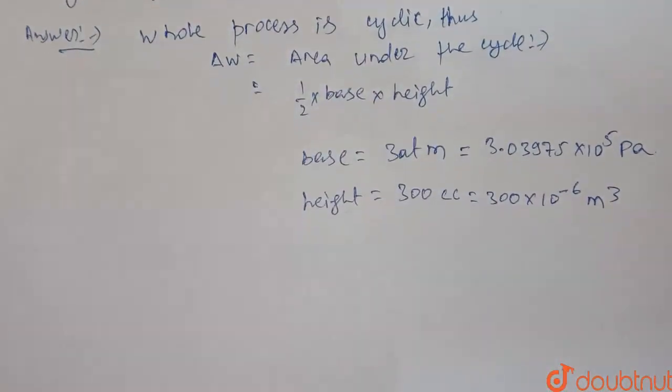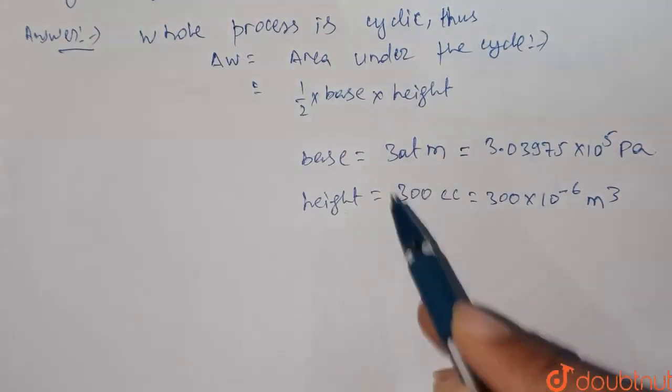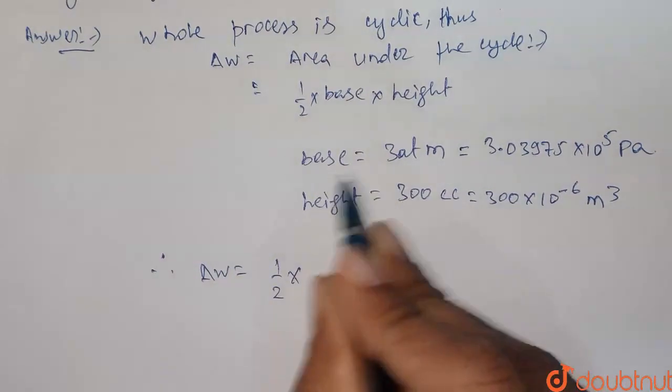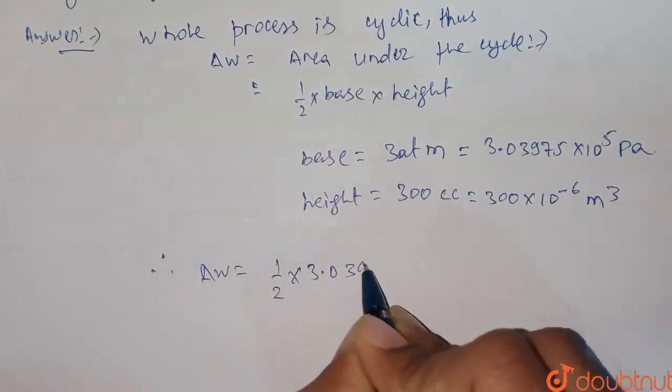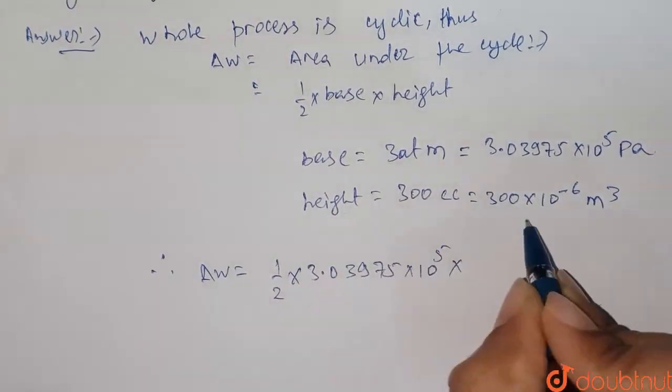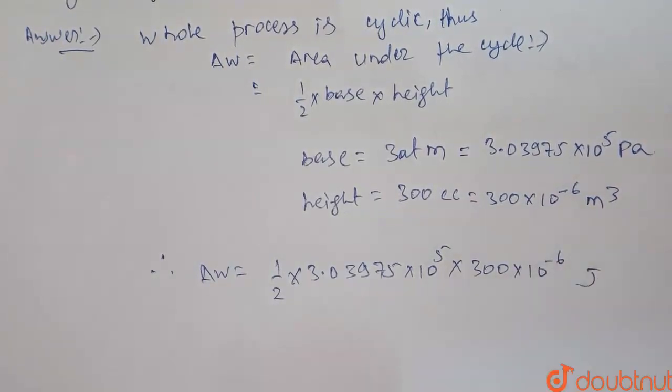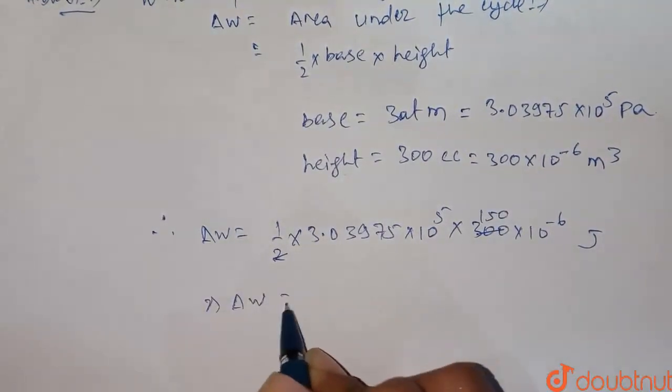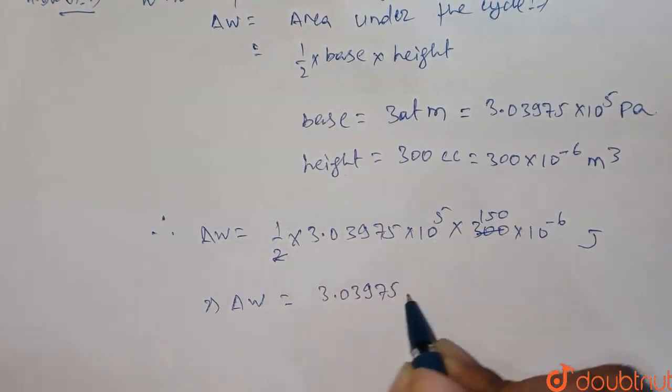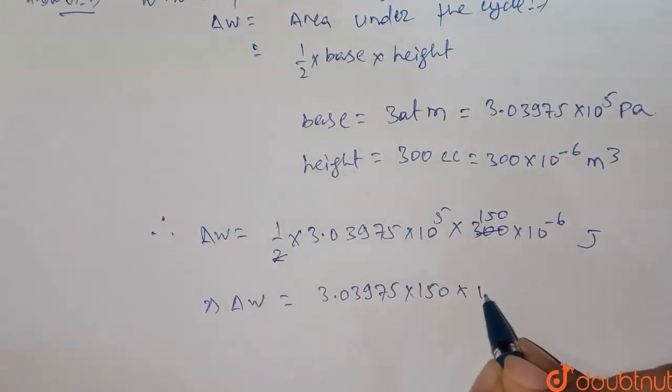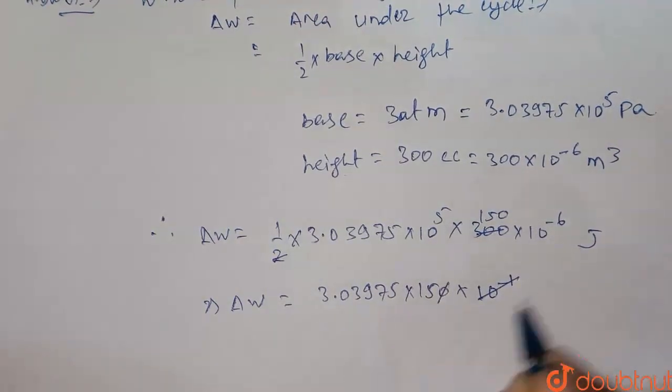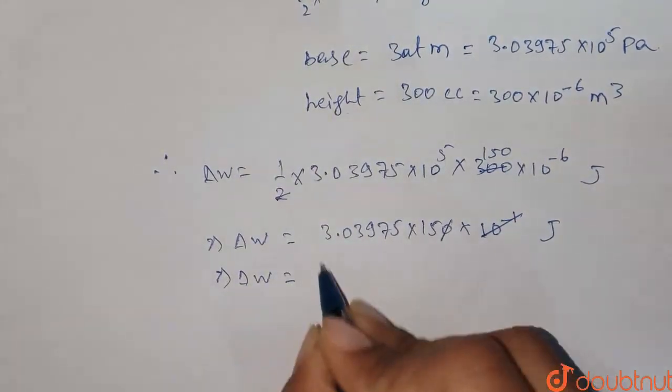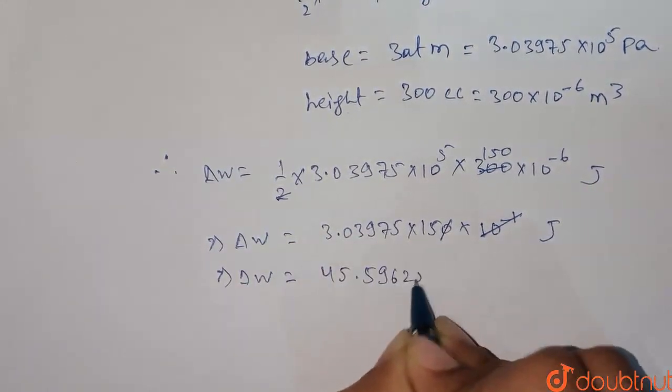This ΔW will be in Joule. We have converted it into SI unit, thus we will get ΔW in Joule. Therefore, ΔW will be half into base, that is 3.03975 into 10 to the power 5, into height, that is 300 into 10 to the power minus 6, and the unit will be in Joule. This will get cancelled to 150, and we will get ΔW equal to 3.03975 into 150 into 10 to the power minus 1, equal to 45.59625 Joule.